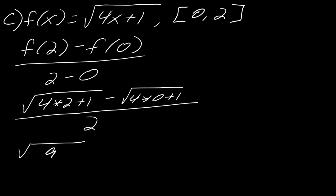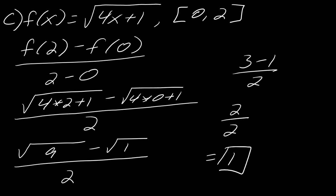So this comes out to the square root of 9 minus the square root of 1, all of this over 2. So this will ultimately be 3 minus 1 over 2. That gives me 2 over 2, so all of this will ultimately equal 1. So that would be my average rate of change in this case.